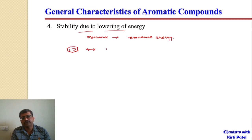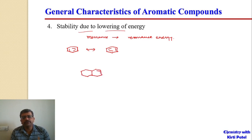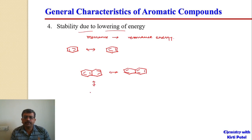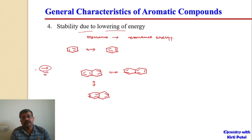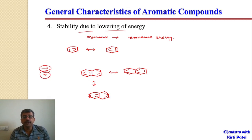Benzene has two resonance structures where the double bond positions change. Naphthalene has three resonance structures. When drawing resonance structures, the double-headed arrow is used — not a single-headed arrow, which would indicate a reaction or equilibrium. Both sides of the double-headed arrow represent the same compound in resonance, not different products.